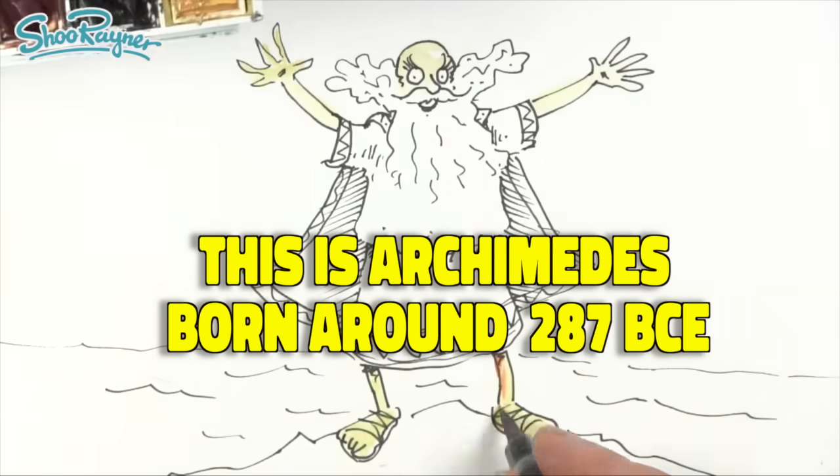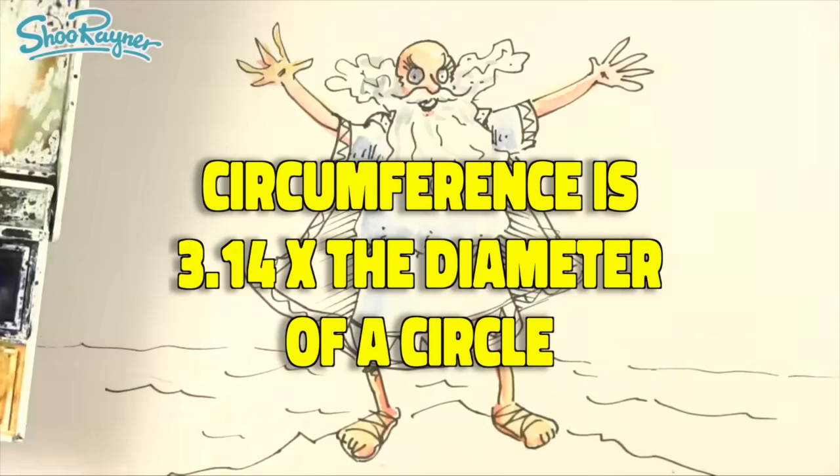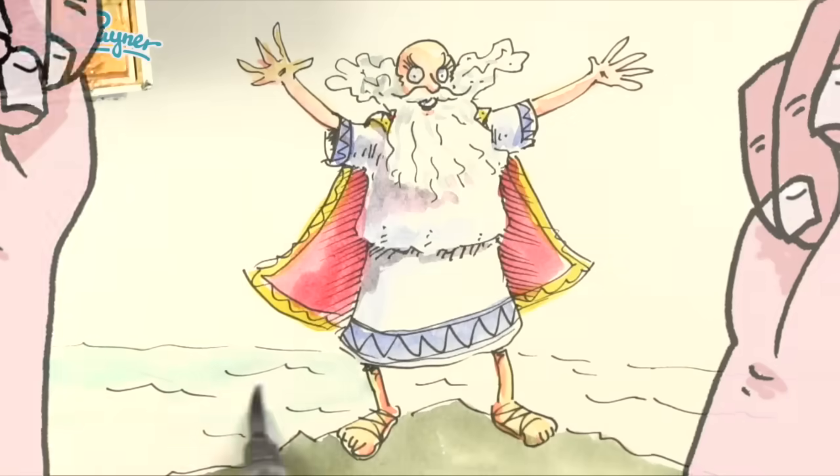Now this is Archimedes and he worked out that the circumference of a circle equals 3.14 times the diameter, but how did he do it? Let's not talk about it, let's work it out.